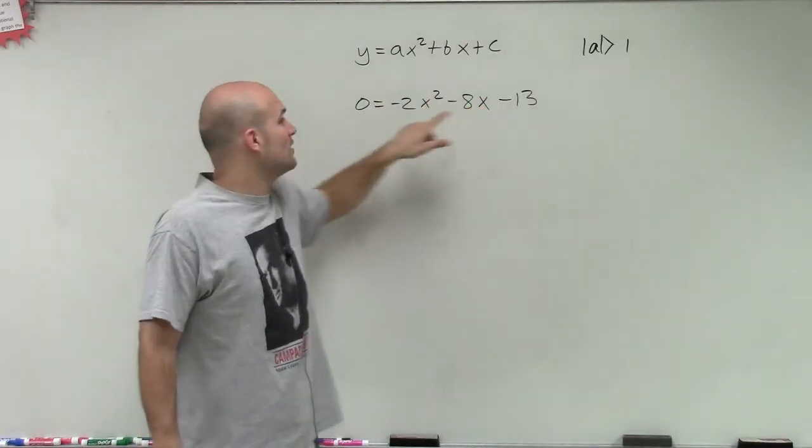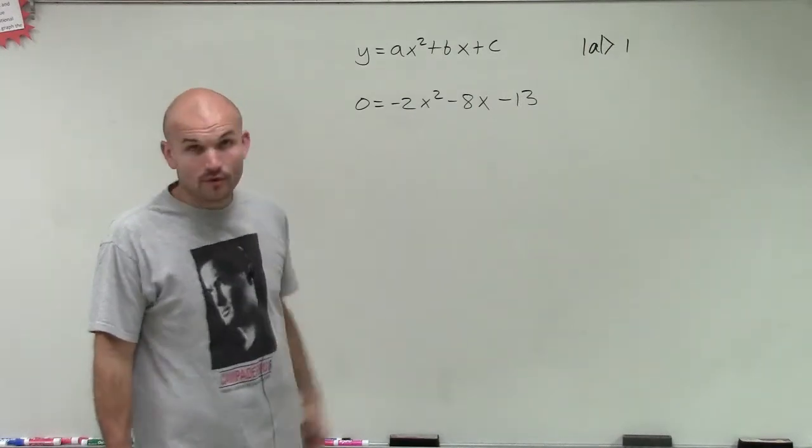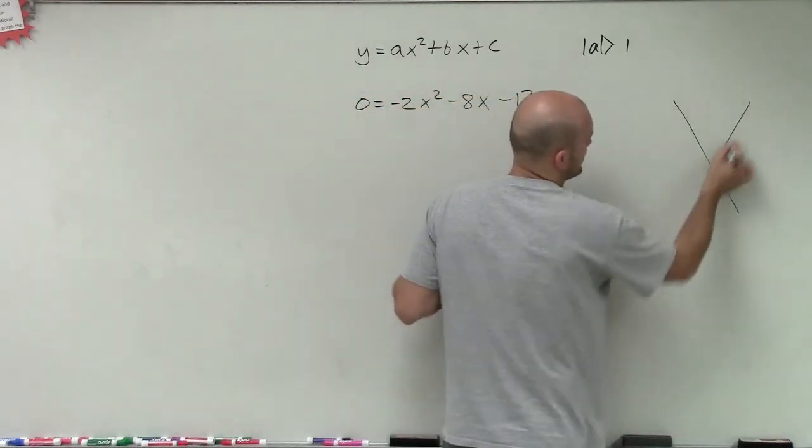And the absolute value of our a is greater than 1, the absolute value, not just the a, but the value of a. So therefore, we're going to use the AC method, which is going to start off with the box, or I'm sorry, the diamond.